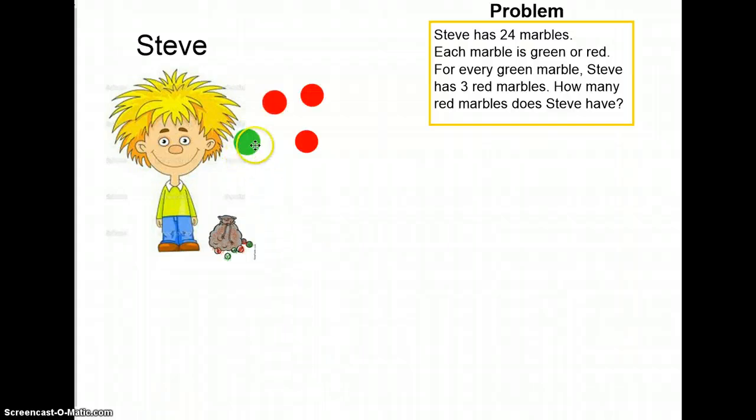We can see that for one green marble, Steve has three red marbles. Since for every green marble Steve has three red marbles, if we add another green marble, he will have three more red marbles.